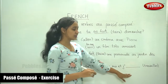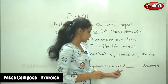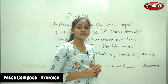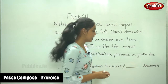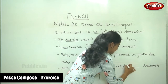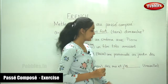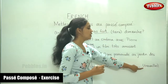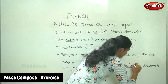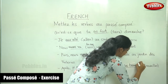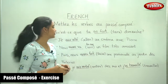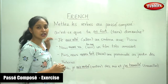Moving on to the next blank: je [travailler]. This verb takes avoir conjugation. For je, it is j'ai. The past participle of travailler: it is an -er verb, so: j'ai travaillé. Read this along with me.